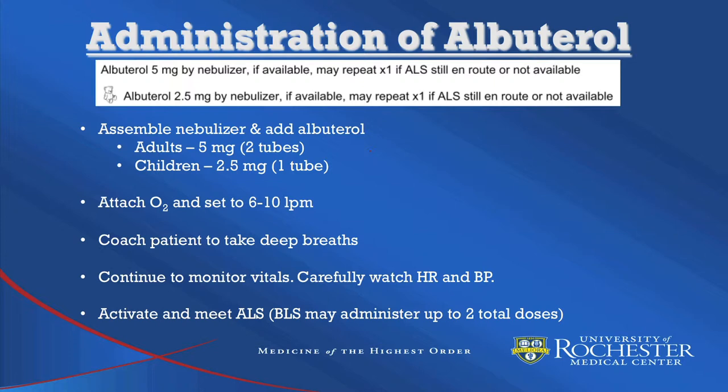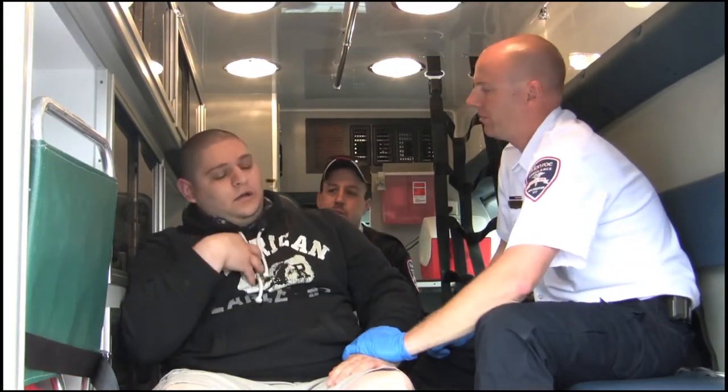Continue to monitor vitals and carefully watch the heart rate and blood pressure. Activate and meet ALS. BLS may administer up to two total doses if ALS is not available. Remember that if ALS is on scene, they may not release to BLS once albuterol administration has taken place. Watch now as our BLS crew administers albuterol to an asthma patient in respiratory distress.